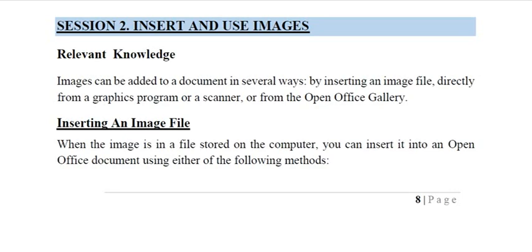Images can be added to a document in several ways: by inserting an image file directly, from a graphics program or a scanner, or we can import it from the OpenOffice gallery which has some predefined images. When the image file is stored on your computer, you can insert it into an OpenOffice document using the methods stated below.